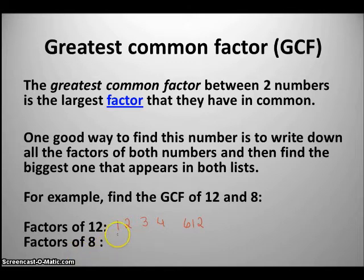Now let's write our factors of 8. We have 1 and 8, and 2 and 4. Now we're going to look and see what is the greatest number that they have in common. So the greatest common factor of 12 and 8 is 4.